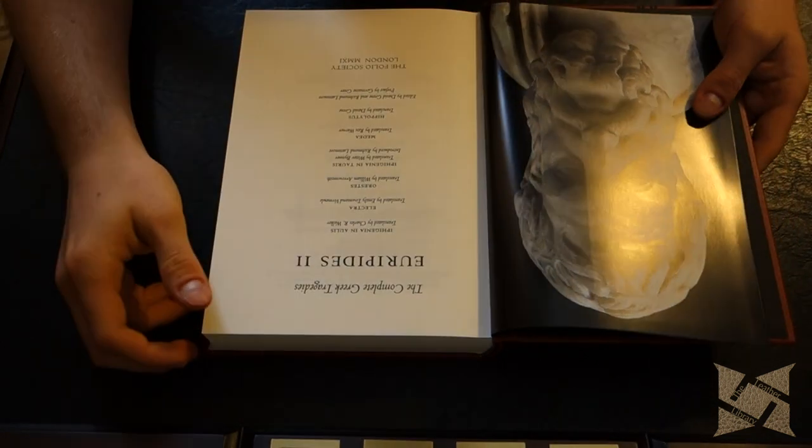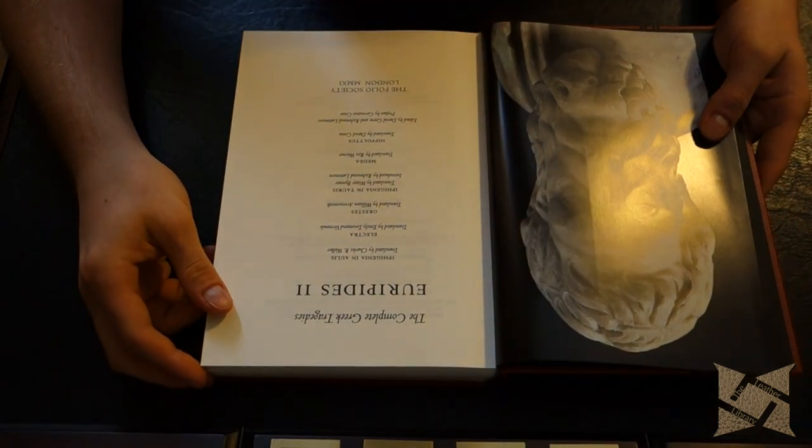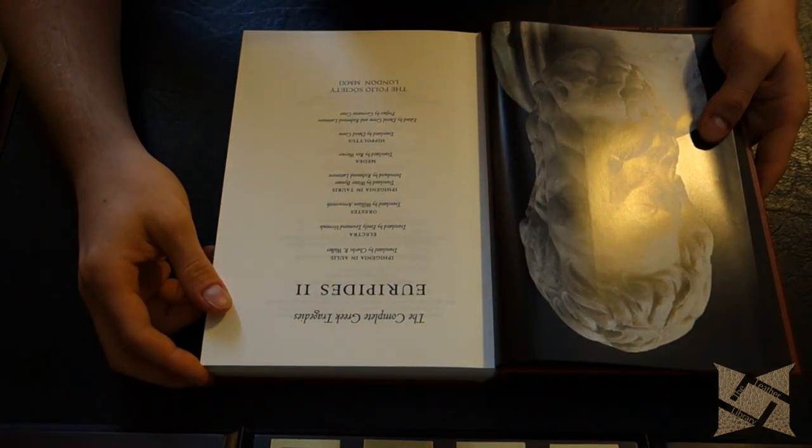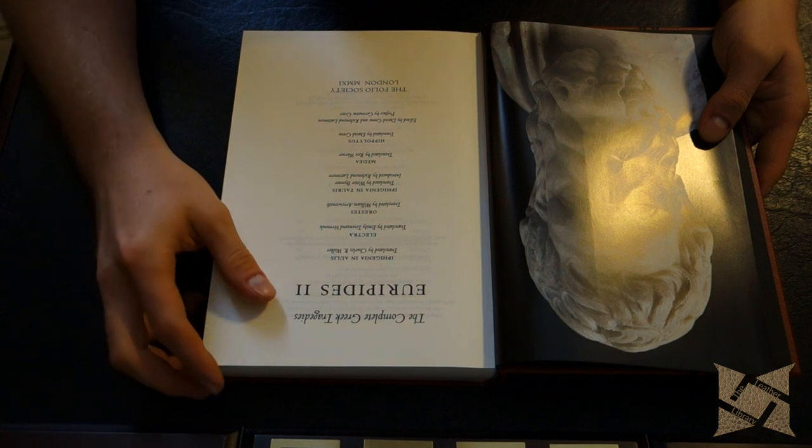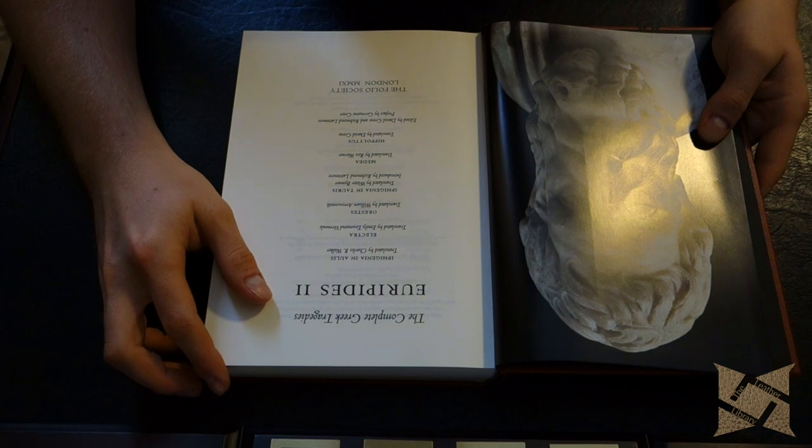Let's see what's in volume four. We got Iphigenia at Aulis, Electra, Orestes, Iphigenia at Tauris, Medea, and Hippolytus. Let's look through for the artwork.